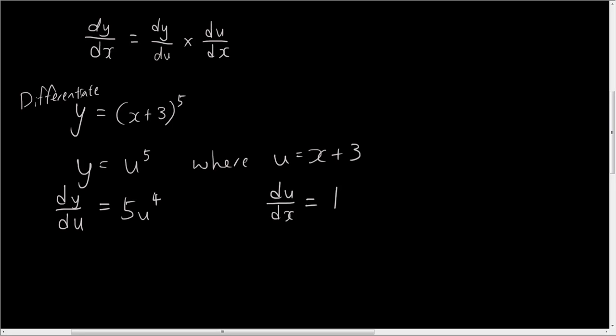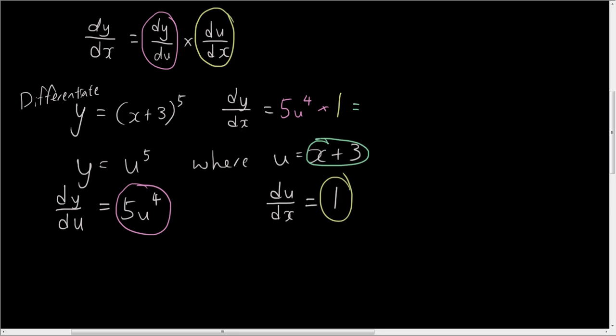Now we can simply apply the chain rule to find dy over dx which is equal to dy over du which is 5u to the power of 4. Let me just circle it with the same color. So we have dy over du which is this one here, so it's 5u to the power of 4 times du over dx which is this one here which is 1, so times 1. So that simply equals, now we're going to substitute the value of u back into this equation. So that's 5 bracket x plus 3 to the power of 4. So that is the answer.